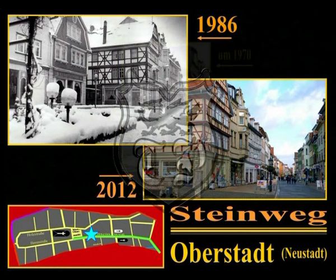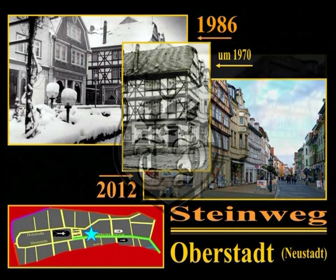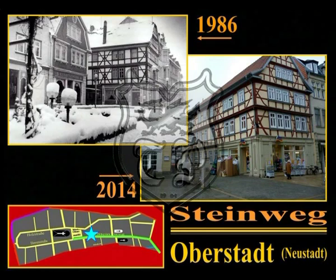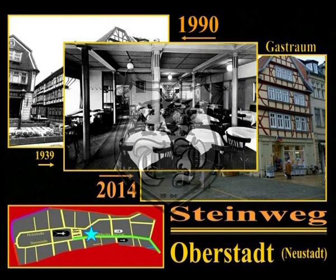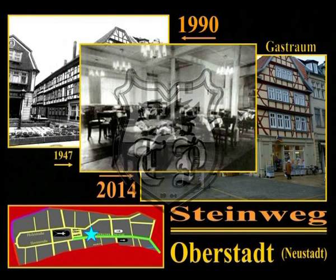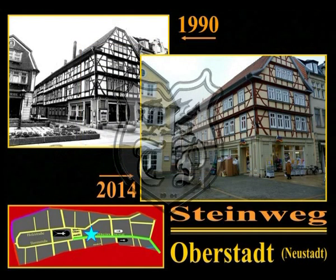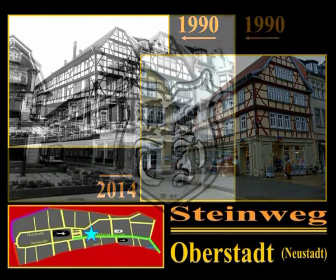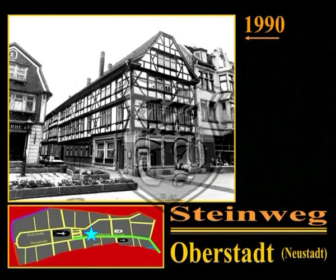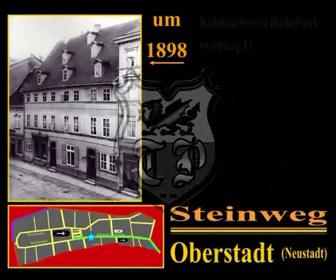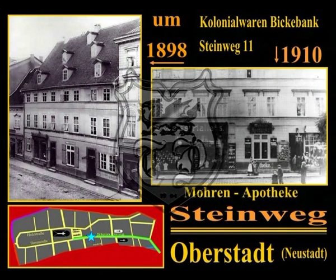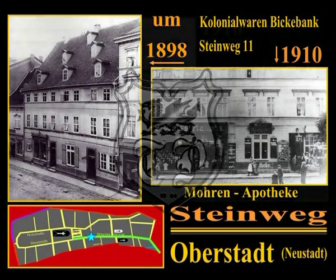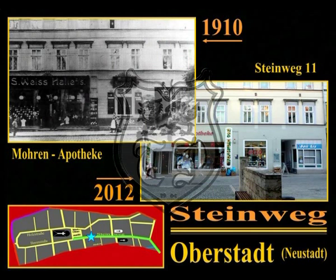Dort, wo 63 Jahre lang eines der besten Cafés der Stadt seine Gäste empfing, ist seit dem Jahr 2000 ein Drogeriemarkt ansässig. Leider konnte sich das Stadtcafé auch an der neuen Adresse nicht lange halten; die originale holzvertefelte Einrichtung des alten Stadtcafés wurde aber von den neuen Besitzern übernommen. Gegenüber des ehemaligen Stadtcafés am Steinweg 11 befindet sich die Mohrenapotheke, gegründet bereits 1626 – sie ist damit die älteste noch bestehende Apotheke von Mühlhausen. Nebenan befand sich Ende des 19./Anfang des 20. Jahrhunderts der Kolonialwarenladen Binkebank.